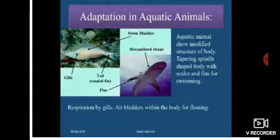Adaptation in aquatic animals. Aquatic animals show a modified structure of body: a tapering spindle-shaped body with scales and fins for swimming, respiration by gills, and air bladders within the body for floating.